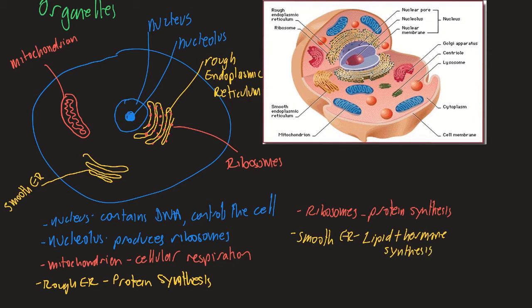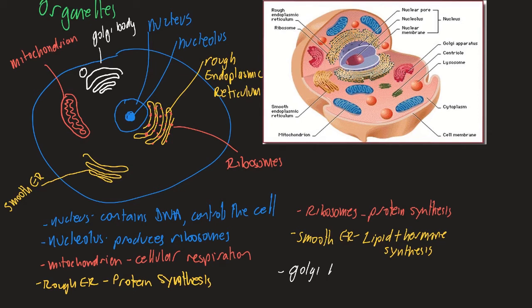There's also a third highly folded organelle called the Golgi apparatus, or Golgi body. It acts like the post office of the cell: it packages things into little vesicles that bud off the membrane of the Golgi apparatus and can then exit the cell. Its job is transport and export — forming its membrane into vesicles that are exported through exocytosis.